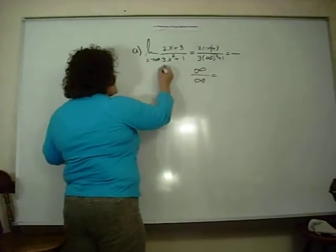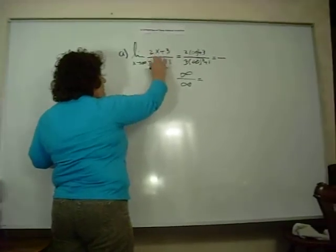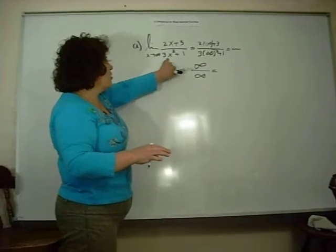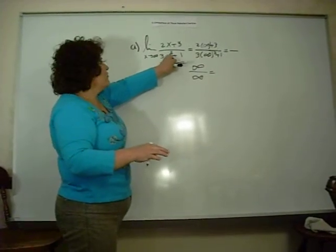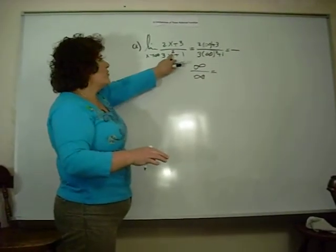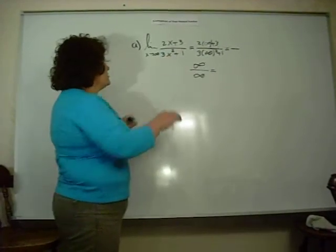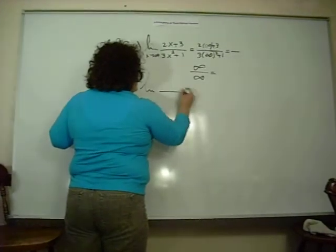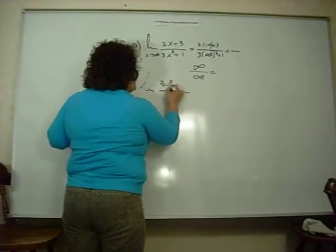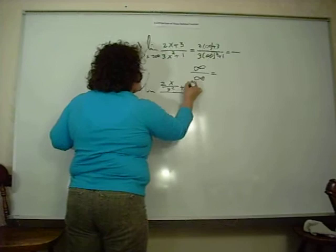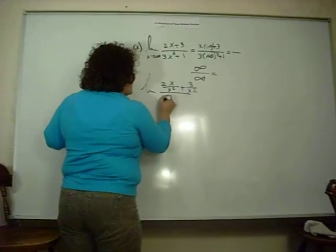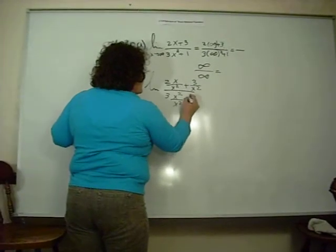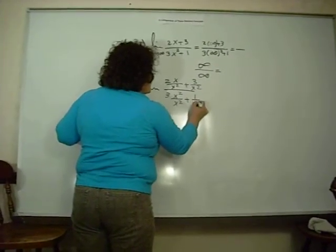What we do is look at the denominator of your fraction. Always look at the denominator and find the highest power there, which is x squared — that's degree two. So I'm going to divide: two x plus three over x squared, divided by three x squared plus one over x squared.